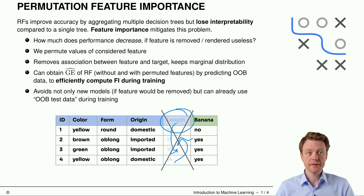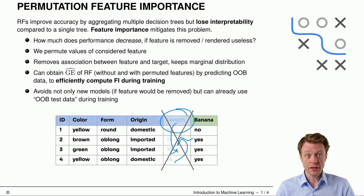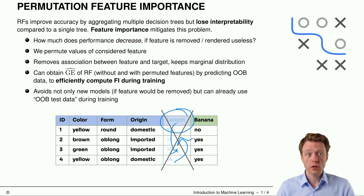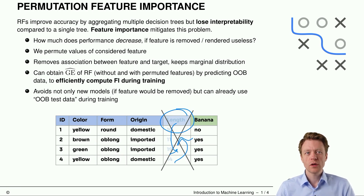We can then obtain an estimate of the generalization error of this random forest with and without permuted features by predicting on OOB data. This is very efficient to compute during training because we avoid training new models. If you truly deleted the entire column, the model you trained is no longer valid and you'd have to retrain with one column less — which is computationally intensive. Instead, we reuse the OOB observations as test data points.